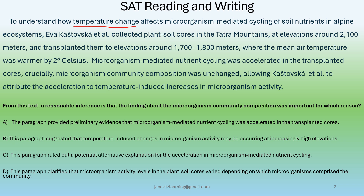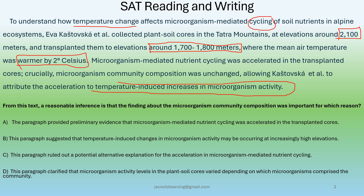To understand how temperature change affects microorganism-mediated cycling of soil nutrients in alpine ecosystems, Eva Kastavowska et al. collected plant soil cores in the Tatra mountains at elevations around 2,100 meters and transplanted them to elevations around 1,700 to 1,800 meters, where the mean air temperature was warmer by 2 degrees Celsius. Microorganism-mediated nutrient cycling was accelerated in the transplanted cores. Crucially, microorganism community composition was unchanged, allowing Kastavowska et al. to attribute the acceleration to temperature-induced increases in microorganism activity.